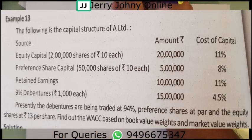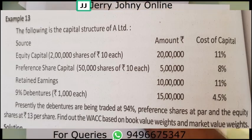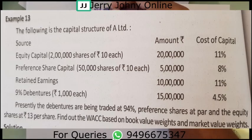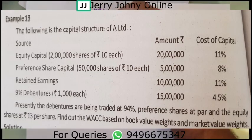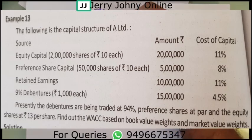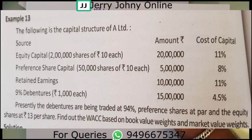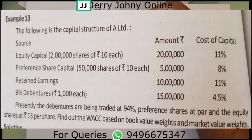The data: equity capital is 2 lakh shares of 10 each, amount 20 lakhs, cost of capital 11 percent. Preference share capital, total amount 5 lakhs, 8 percent. Retained earnings, 10 lakhs, 11 percent. 9 percent debentures, 15 lakhs, cost 4.5 percent. The debentures are being traded at 94 percent, preference shares at par, and equity shares at 13 per share. Find out the weighted average cost of capital based on book value weights and market value weights.